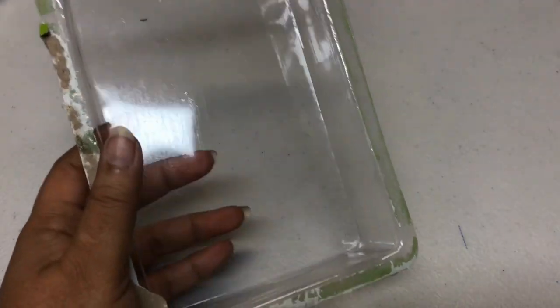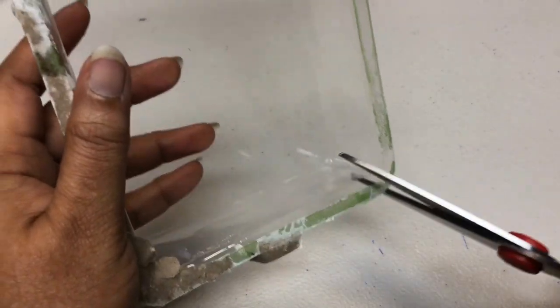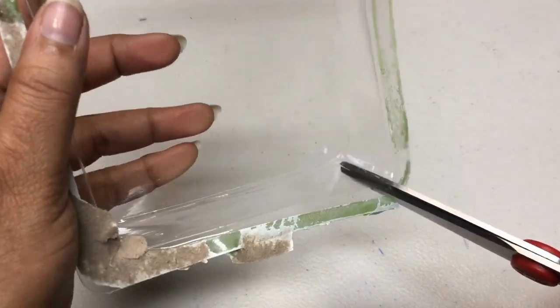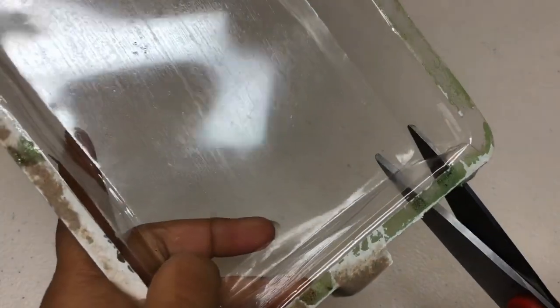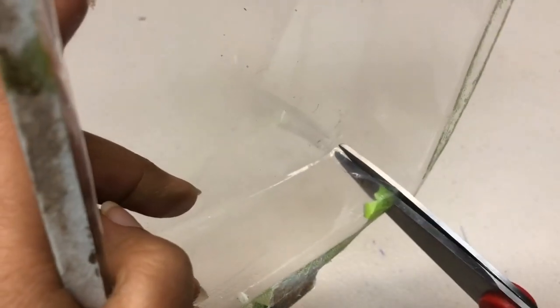What you see here is a packing material, just a plastic. If you have an OHP sheet, you can use it. This packing material was a little stronger than the OHP, so I prefer to use this one.